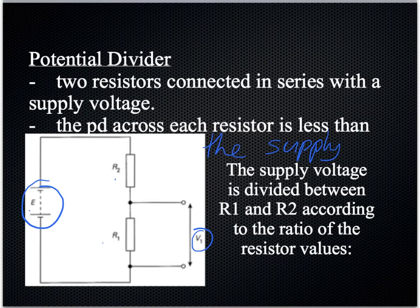So what happens is that the supply voltage is always divided between R2 and R1, or R1 and R2, according to the ratio of the resistor values. So we're going to develop an equation and show you how that works.